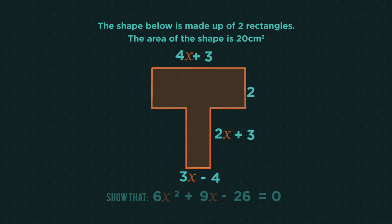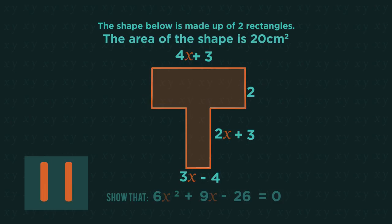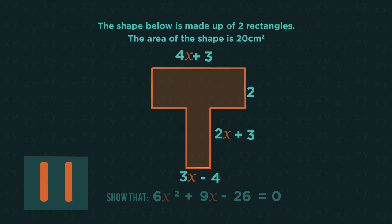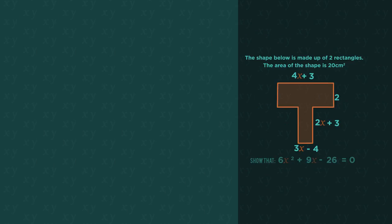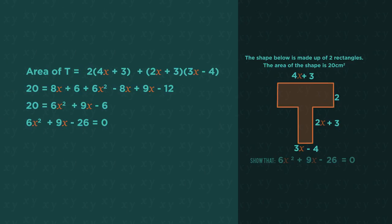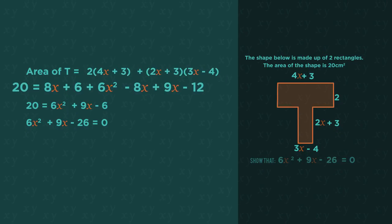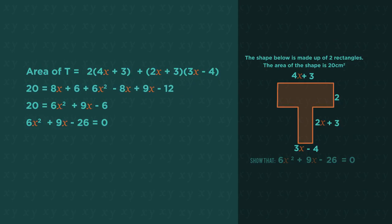Give this one a go. You're finding the area of the t-shape. Pause the video and work it out. Did you get it right? The area of one rectangle plus the area of the other added together equal 20cm squared. Then expand and simplify and rearrange to get the final answer.